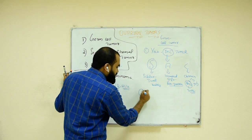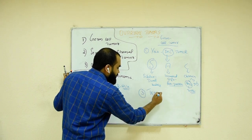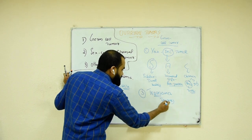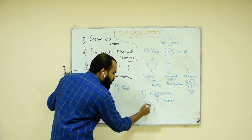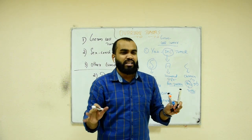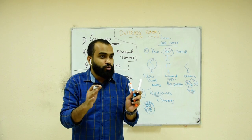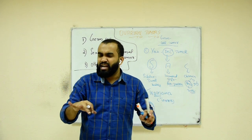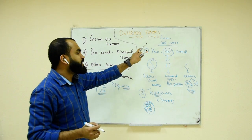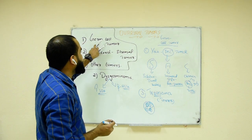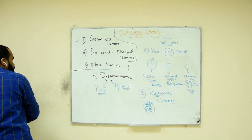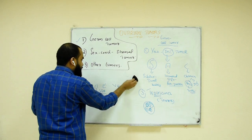The third germ cell tumor is teratoma — think of it as a 'terror' type of tumor. In teratoma, you will see a tumor mixed with bone, teeth, cartilage, and hair — many different body parts all together. So teratoma, dysgerminoma, and yolk sac tumor are the main germ cell tumors.